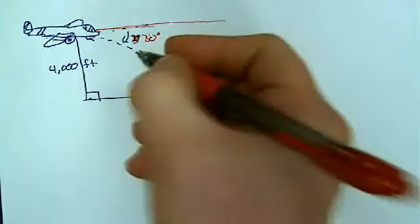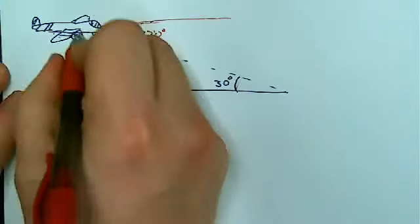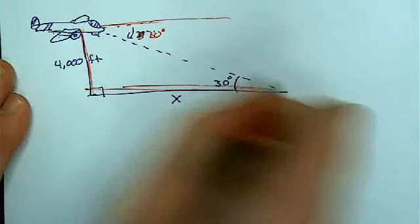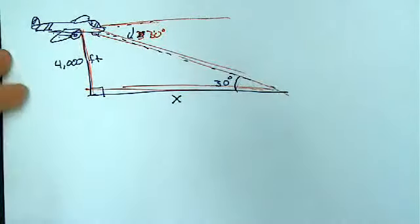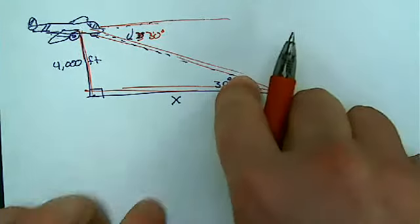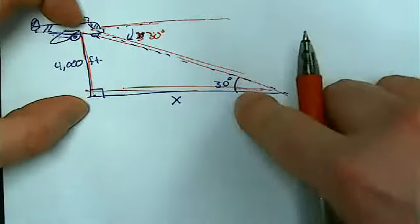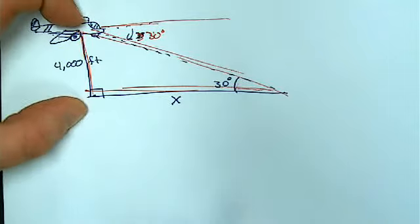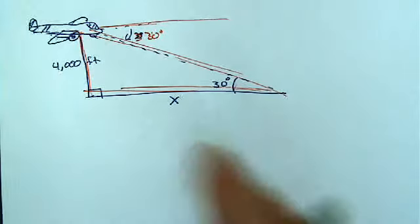And we'll do stuff with angle of declination later. For now, this triangle right here is your important triangle. As our bomber comes in on approach. So 4,000 feet here, 30 degrees here. Before I get too far along, let's get the sides labeled.